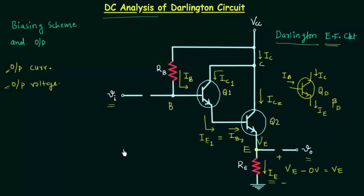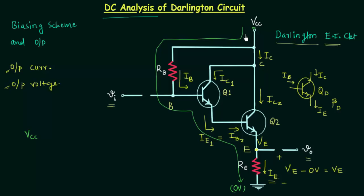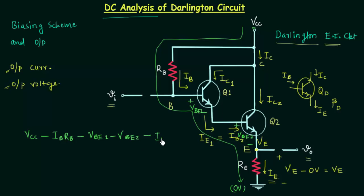To calculate the output current we will apply Kirchhoff's voltage law in the input loop, starting from VCC and ending at ground. We get: VCC − IB·RB − VBE1 − VBE2 − IE·RE = 0. Let's call this equation number 1.